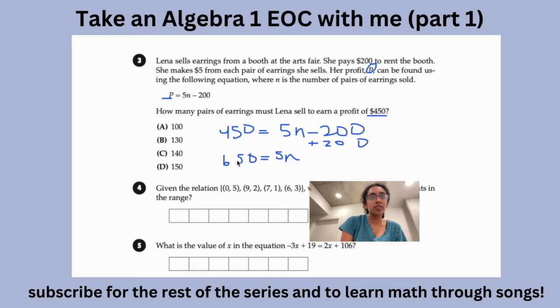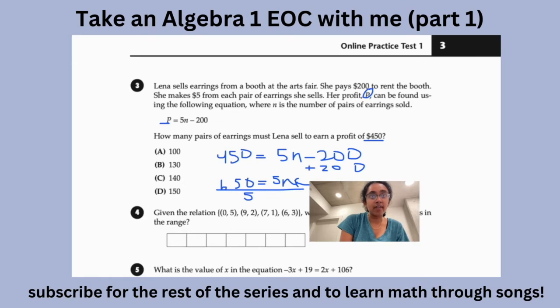So what do you have to do to solve this equation? The variable is a placeholder. So we need to get the variable by itself. So then you would divide both sides by 5 and you would get 130, which is our answer for the pairs of earrings that she has to sell.